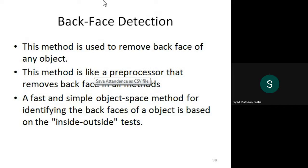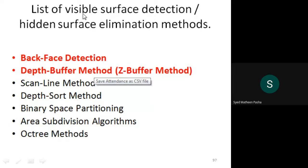Moving to the first algorithm — back face algorithm, or back face detection. There are two algorithms used in visible surface detection. Basically, these algorithms are used to identify the visible as well as invisible areas or surfaces with respect to the object fed as input. For back face detection, the criteria involves a buffer — similar to a depth buffer — which stores the area applied onto the object with visible or invisible surfaces.